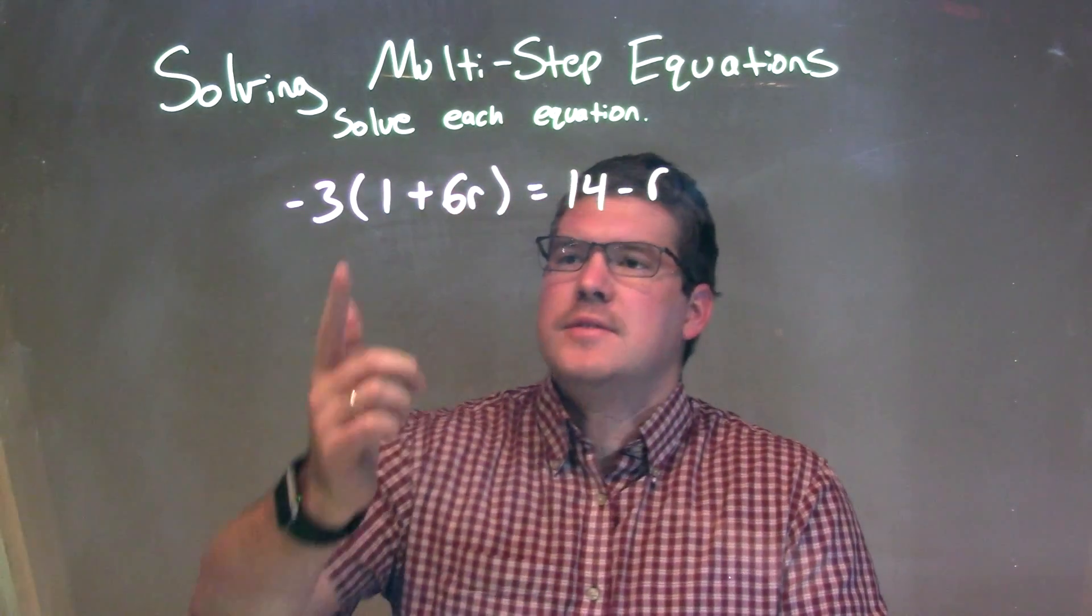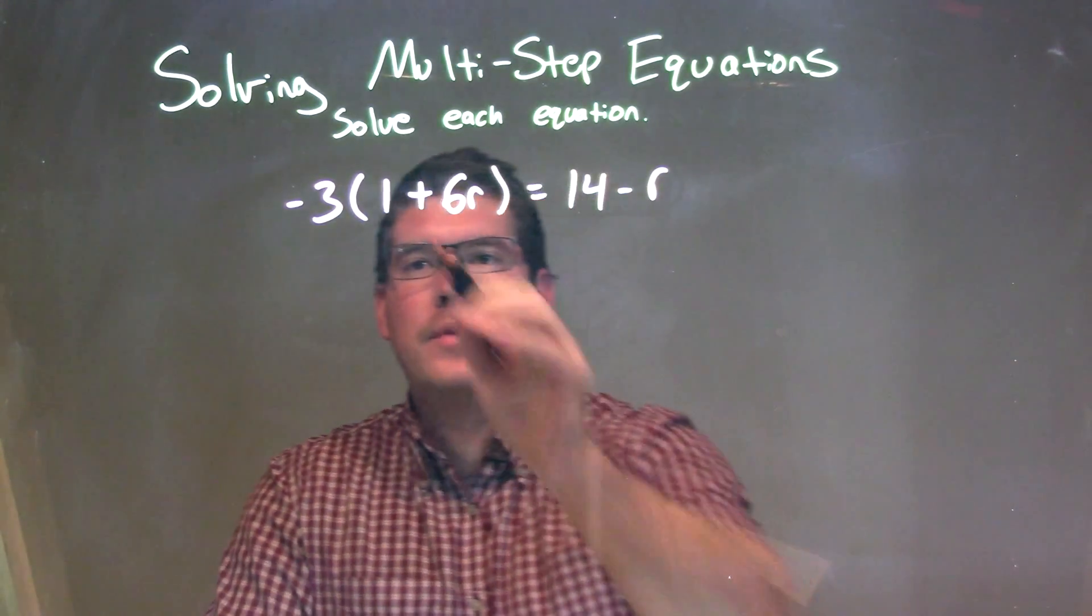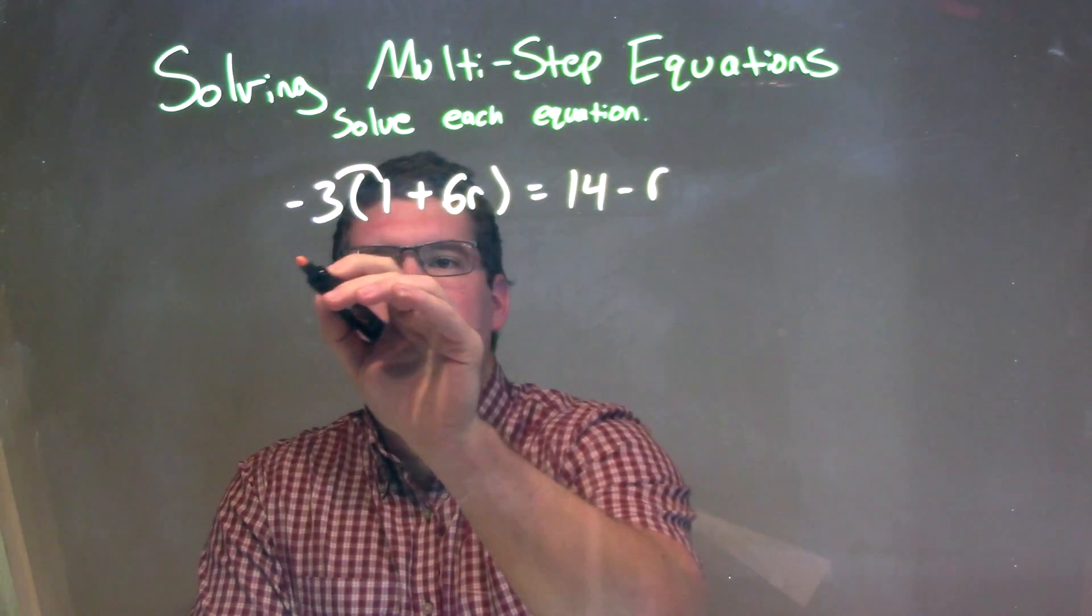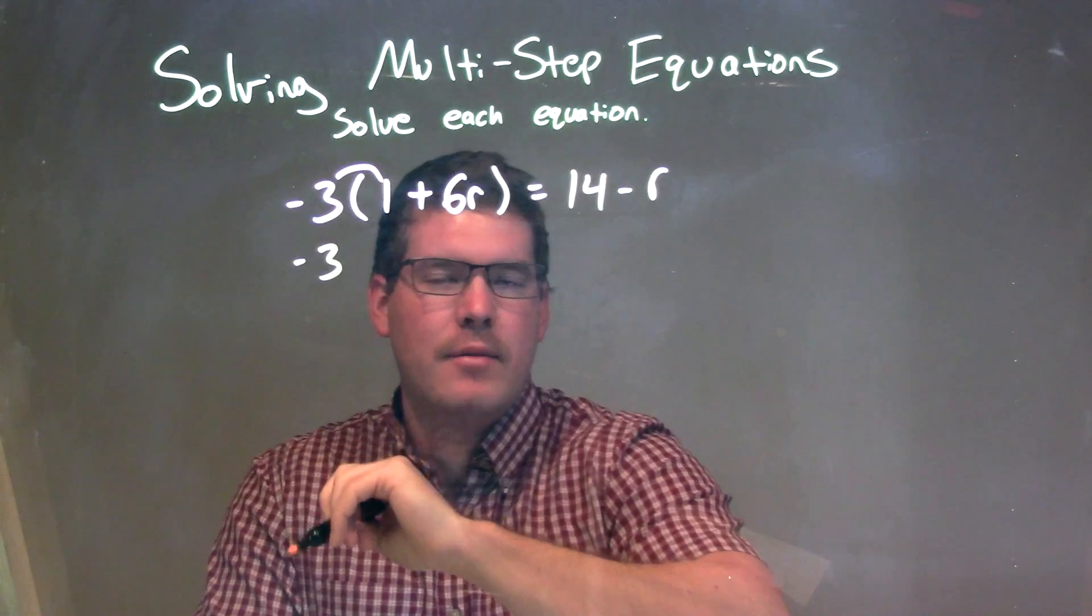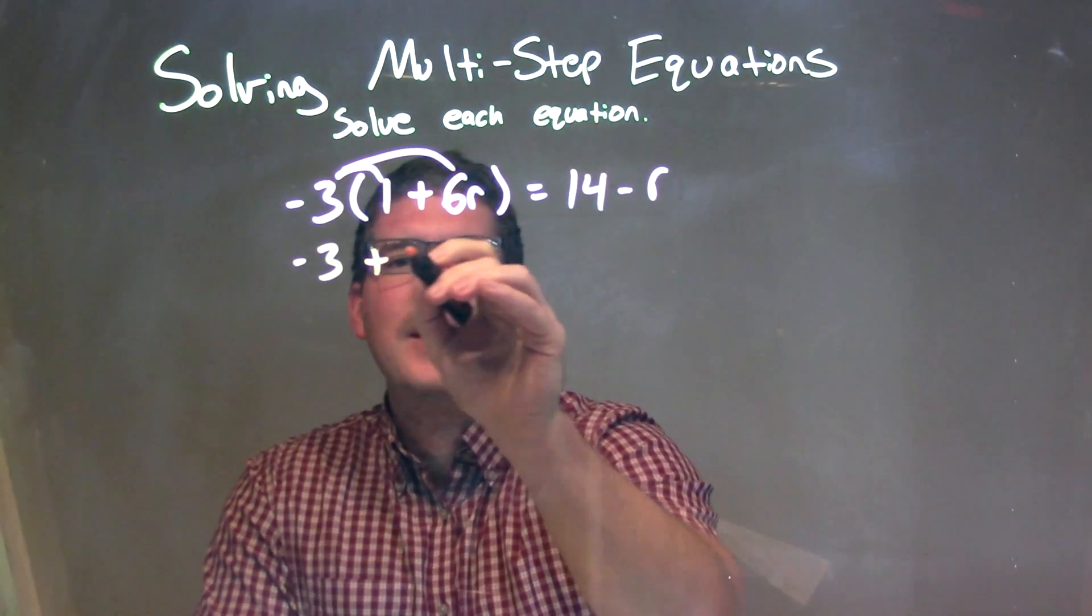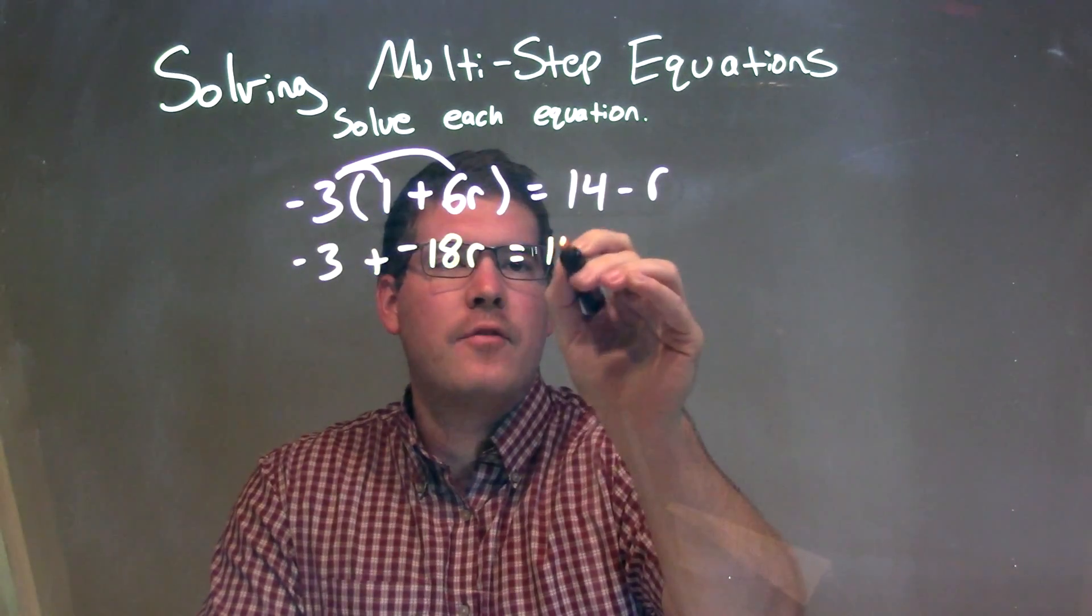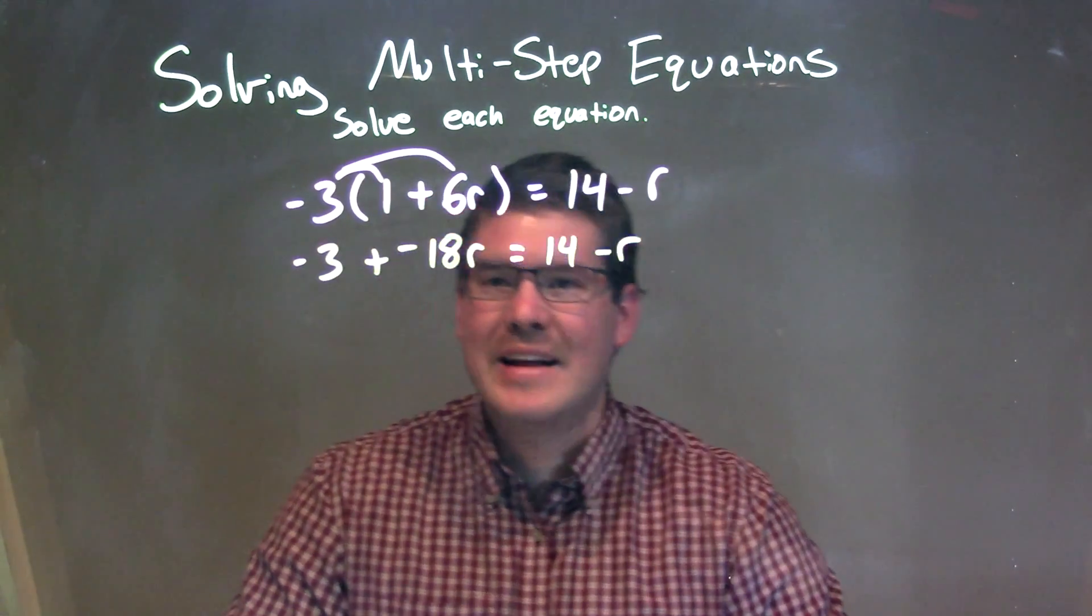So my first step here is I'm going to distribute that minus 3 into our parentheses. So I'm going to take the minus 3 times 1, minus 3, right? Negative 3 times 1 is negative 3, and then negative 3 times a positive 6r is a negative 18r. We're going to bring down the 14 and the minus r right there.